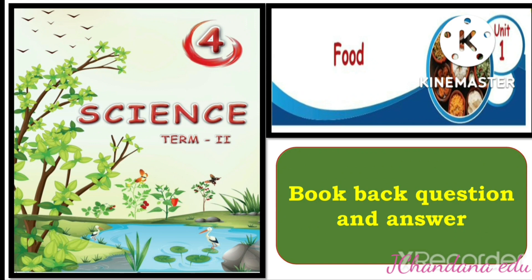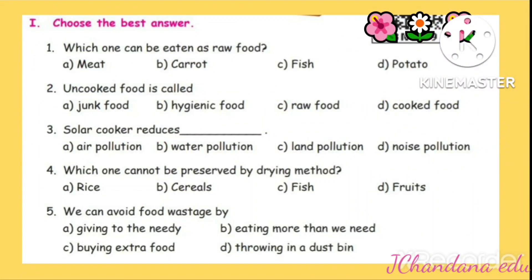Hi, welcome to my channel. Today we are going to see fourth standard science, second term, first lesson: Food. Book questions and answers. Section one: Choose the best answer. First question: Which one can be eaten as a raw food? The answer is option B: Carrot. Second question: Uncooked food is called? The answer is option C: Raw food.